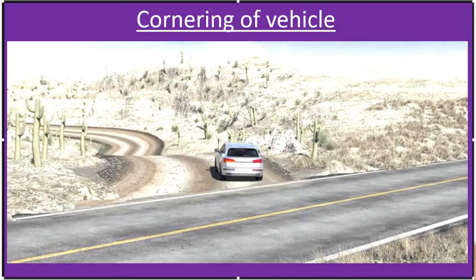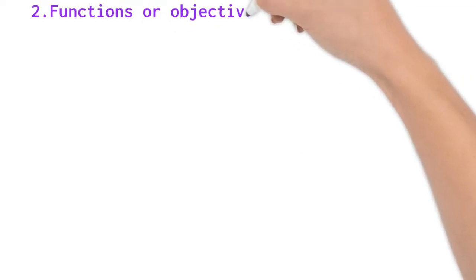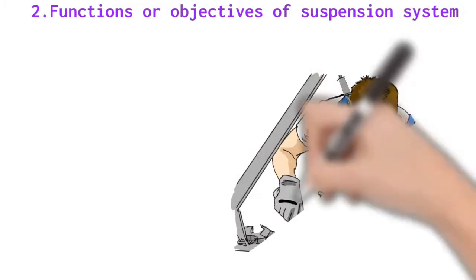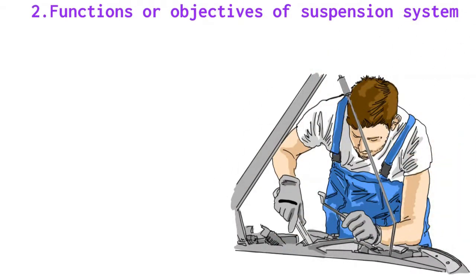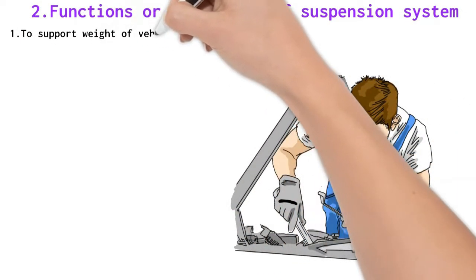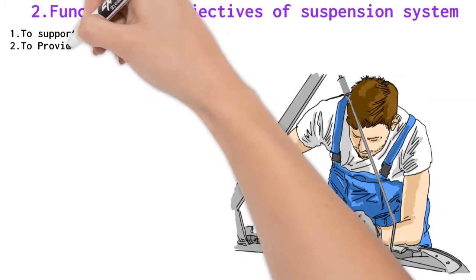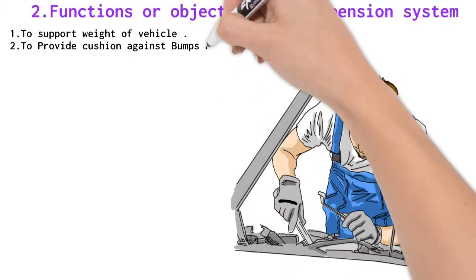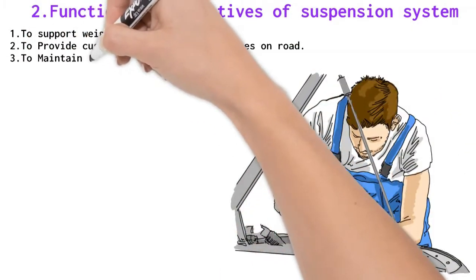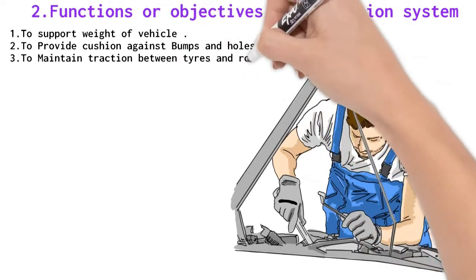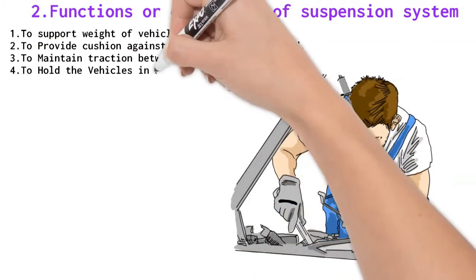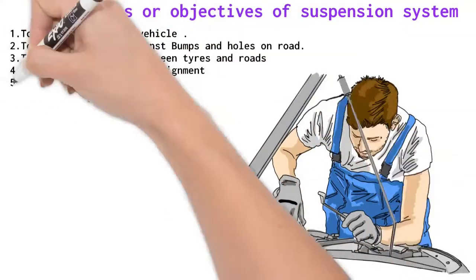Functions of suspension system. The main functions of suspension systems are: to support vehicle weight, to provide cushion against bumps and holes on road, to maintain traction between the tires and road, to hold the vehicle in alignment, and to maintain vehicle steerability in pitching.